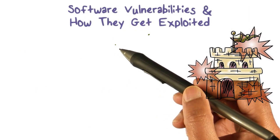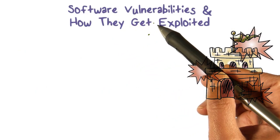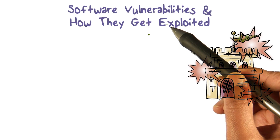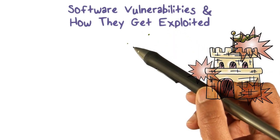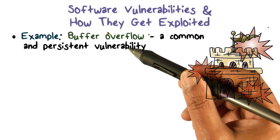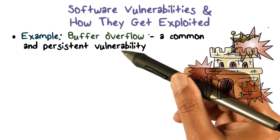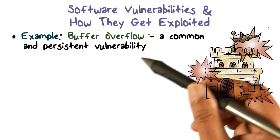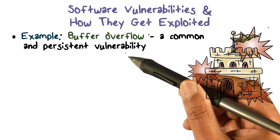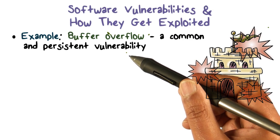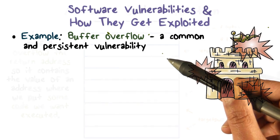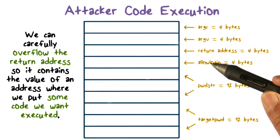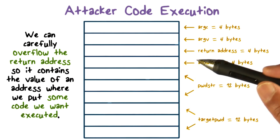Software vulnerabilities are errors or bugs in software that can be exploited by an attacker. The vulnerabilities we're going to talk about come because of memory overflow. As a result of an overflow, an attacker is actually able to exploit a program by inserting new code. Here we should look at this and say there is an opportunity for the attacker.